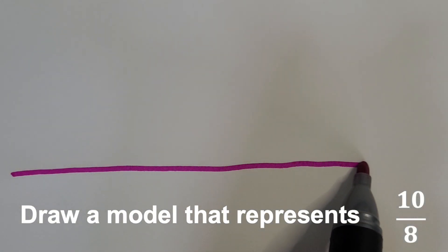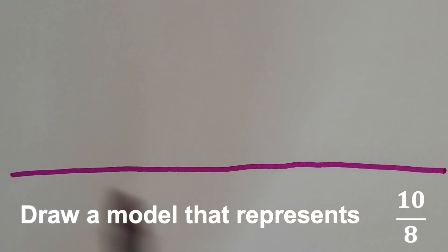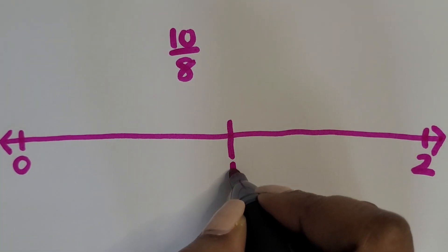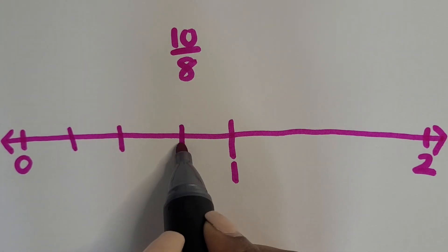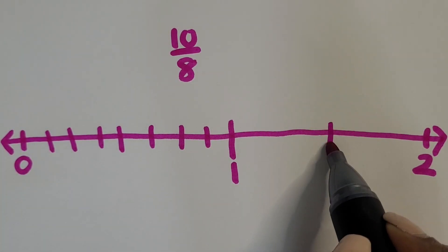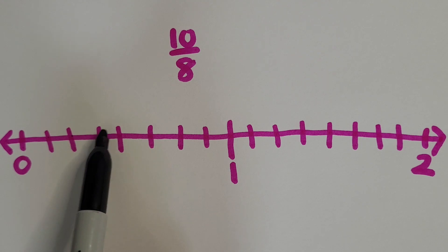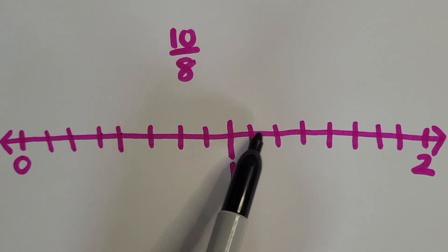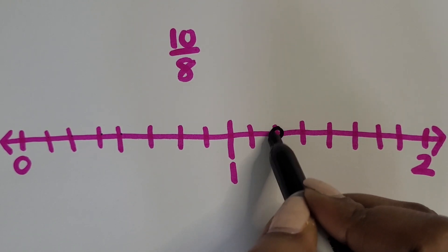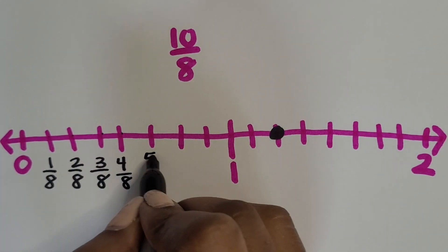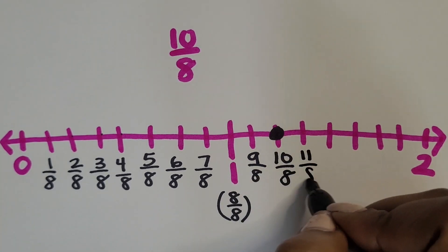Now we'll represent ten eighths. Since it's a fraction greater than one whole, we need at least two wholes. Partition the line into two wholes — zero is the first endpoint, two is the second endpoint, and one whole is in the middle. Then partition each whole into eighths: start by partitioning in half, then into fourths, then into eighths. Count out to ten eighths and label them. You can label all the tick marks or just the point representing the given fraction.